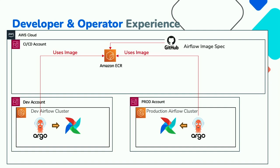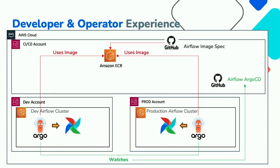ArgoCD stands for declarative GitOps using Kubernetes. What ArgoCD does is watch files in a source control repository where you maintain all your configurations. For example, if you're running version 2.4.3 and want to upgrade to 2.6.2, you just update the GitHub configuration file to say 2.6.2. ArgoCD is intelligent enough to detect that change and automatically update your Apache Airflow environment. I highly recommend adding a human approval step to prevent unauthorized updates.